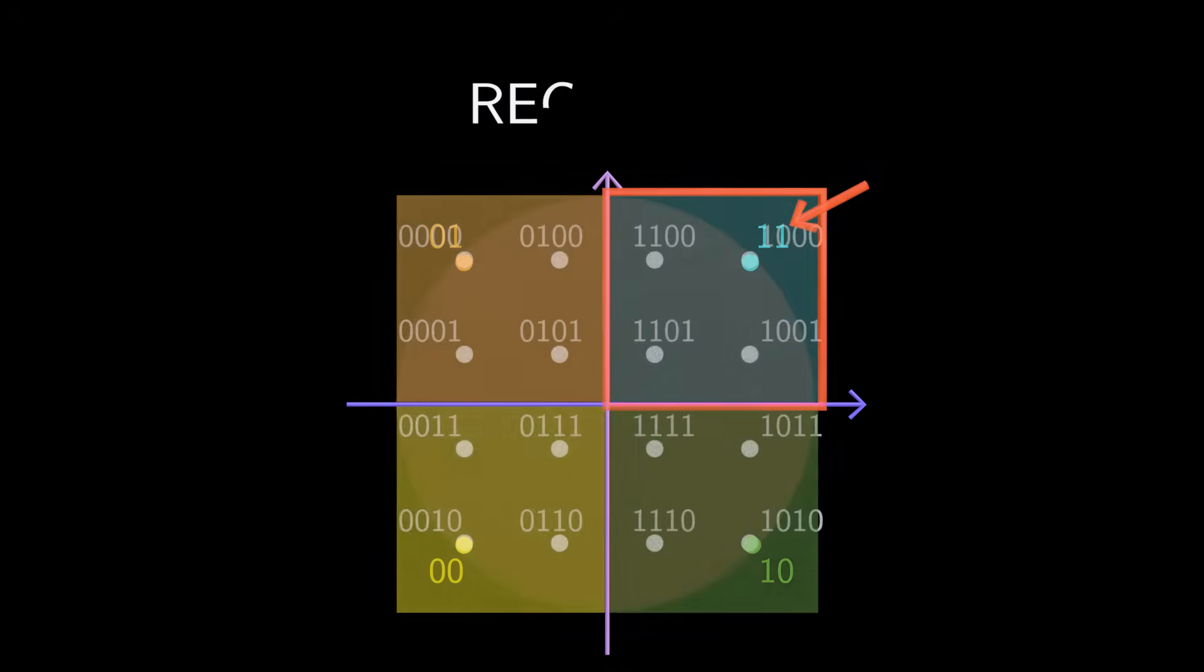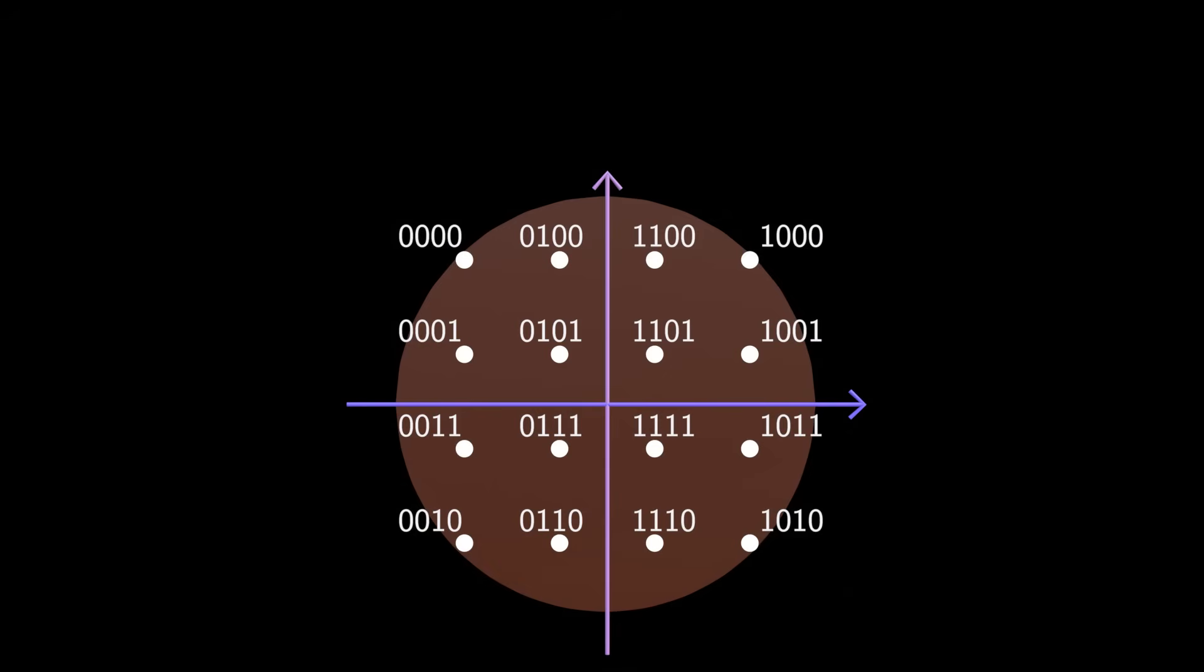Here's another example where the transmitter encodes four bits into a single wave, which requires 16 constellation points. We arrange these points in a square grid pattern because this arrangement increases the minimum distance between any two points, thereby reducing the error probability.